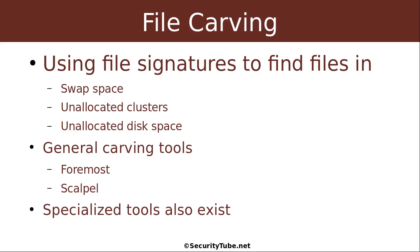One last thing to mention: file carving. This is used to find files in swap space, unallocated clusters within a partition, or unallocated disk space not inside any partition. There are a couple of popular general carving tools — one is called Foremost and another is called Scalpel — and we'll show you how to use these in future videos. There are also specialized tools. For example, if I have fragments of a video file found in slack space, a specialized carving tool can take those fragments and reconstruct a video file.